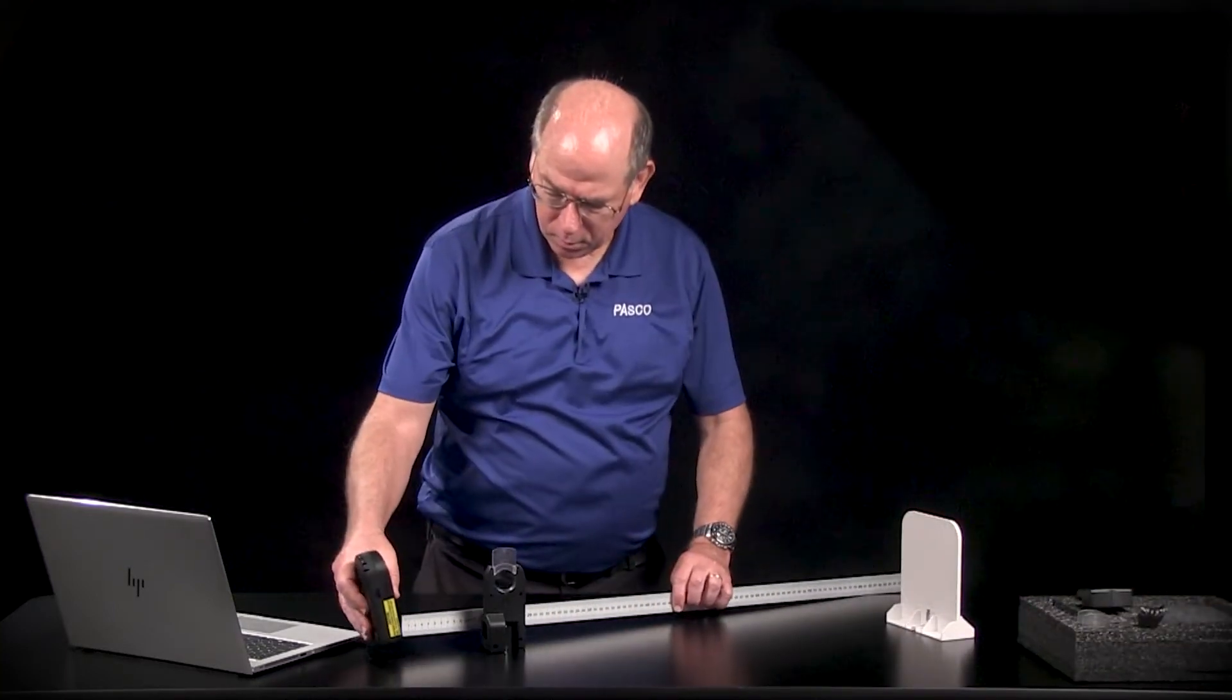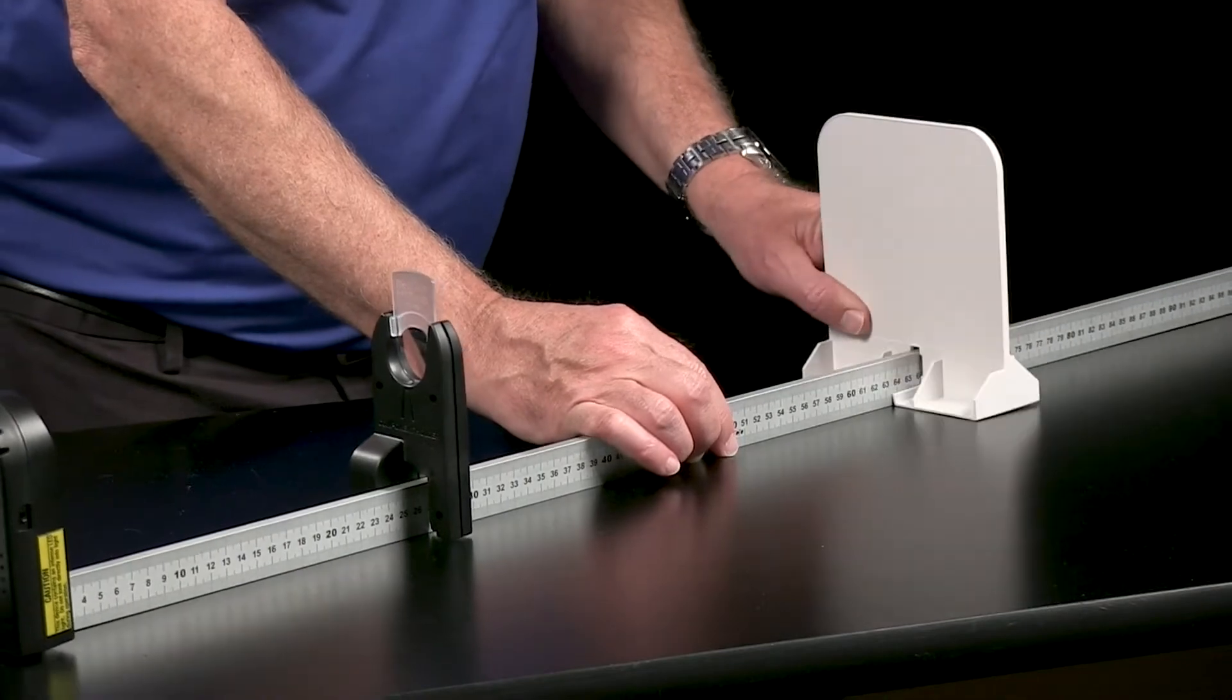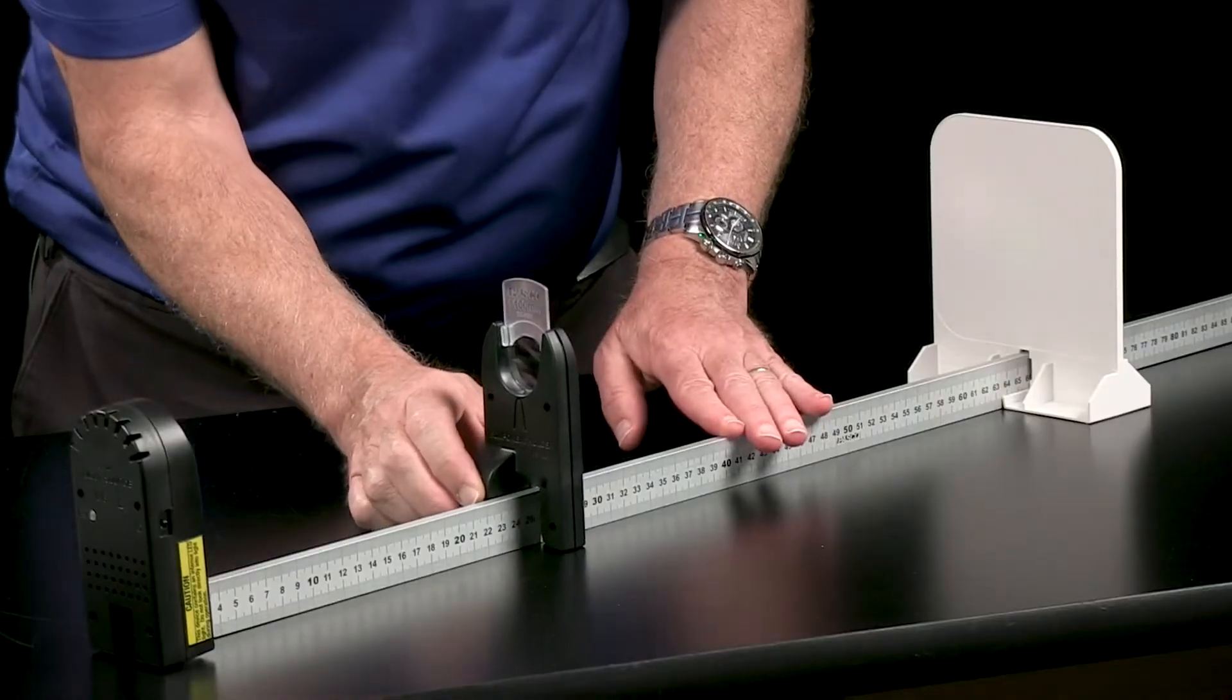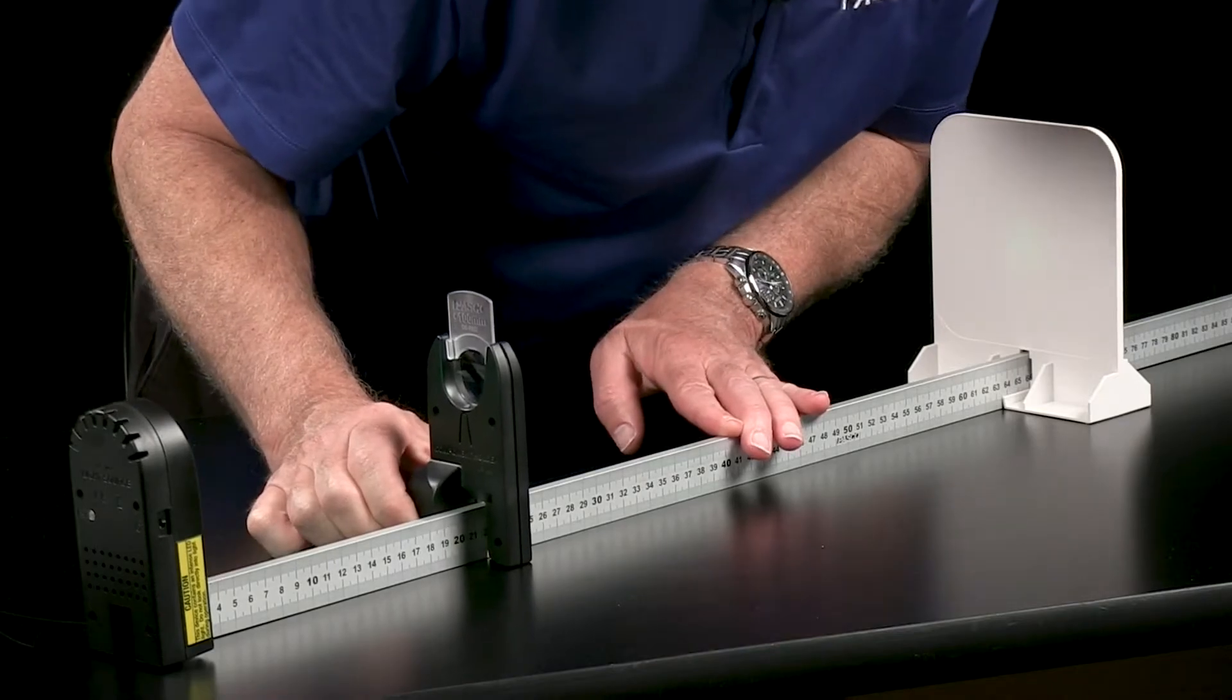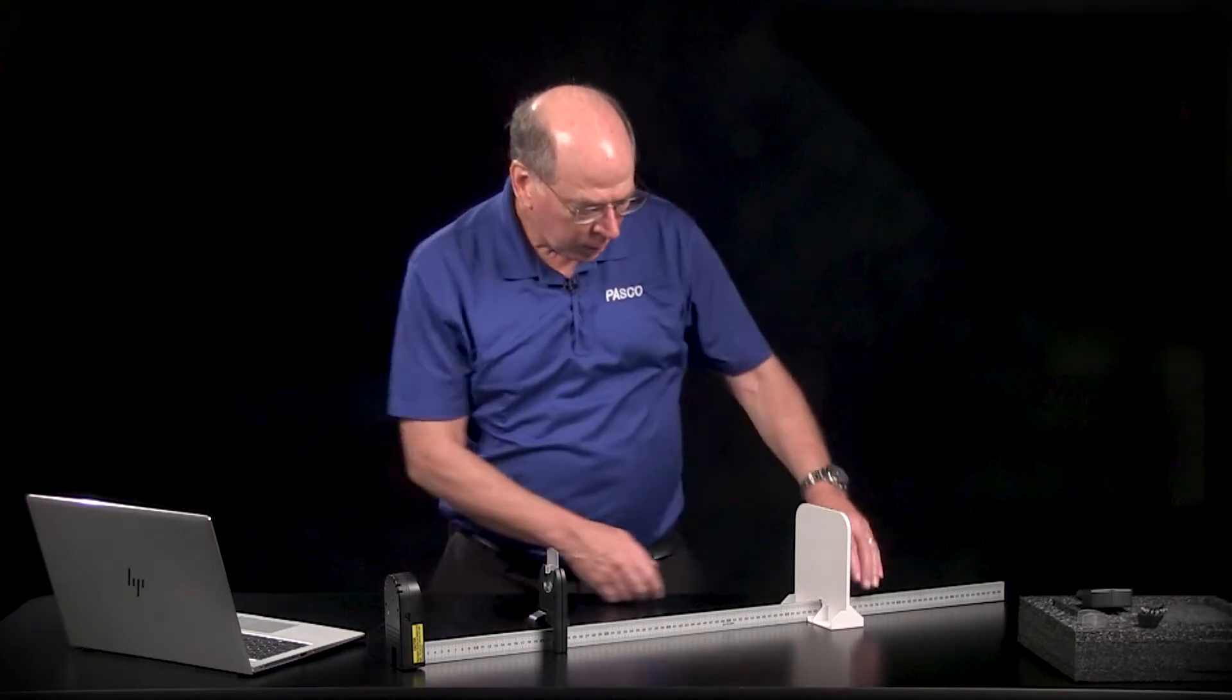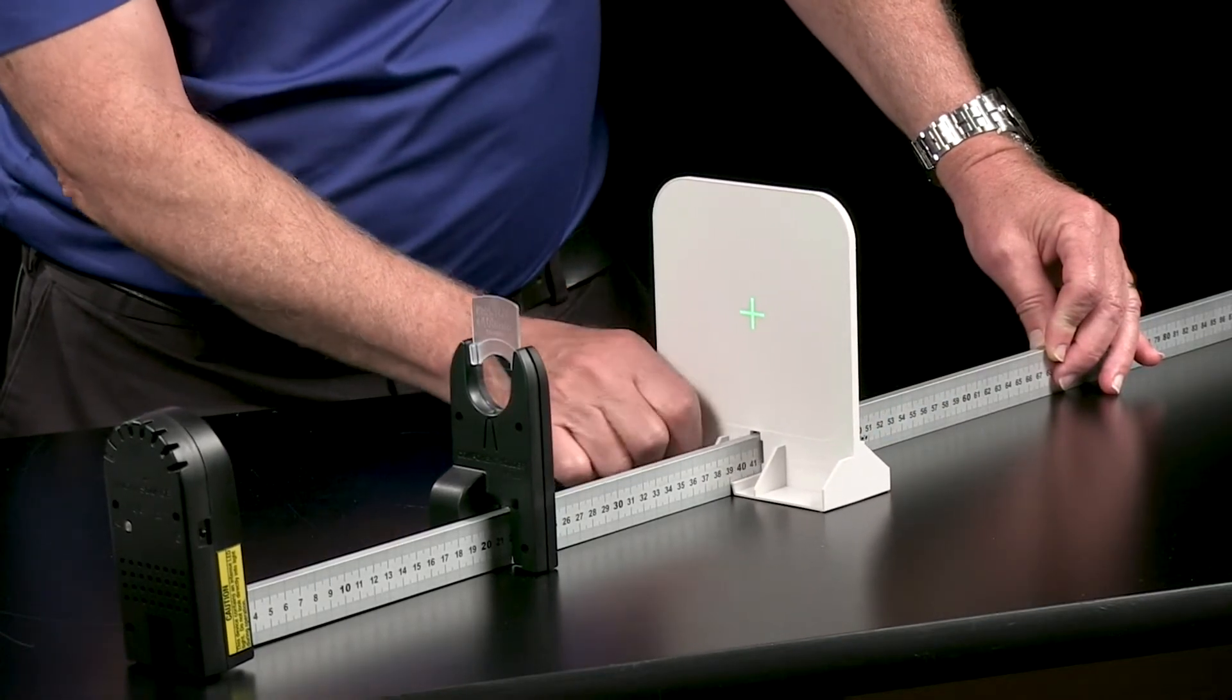The light source goes on the end, then the component holder, screen, turn on the light source, and let's do one measurement. I'm going to put this at 22 centimeters, and that is our object distance - the distance from the light source to the lens.